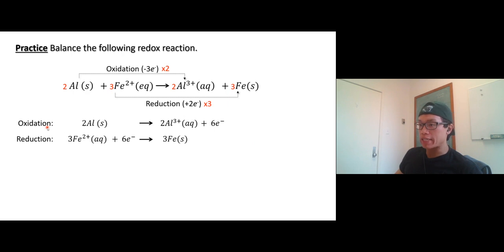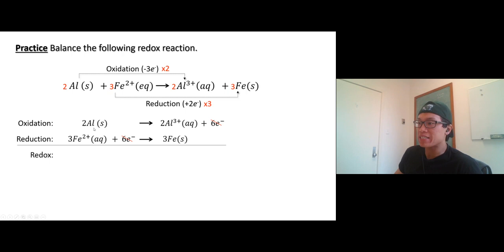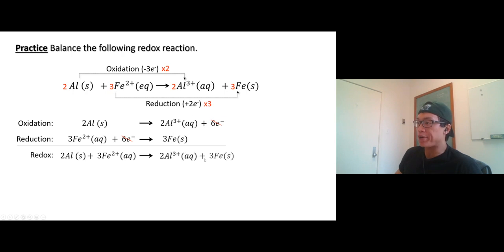So that's oxidation, that's reduction. Now the redox reaction — when you combine these, it's just like an equation: whatever is on the left or on the right, you can cancel them out if they have the same value. Six electrons on the left, six electrons on the right — cancel them out and combine into a redox reaction. So we have two aluminum plus three Fe²⁺, and we get two Al³⁺ and three iron metal.